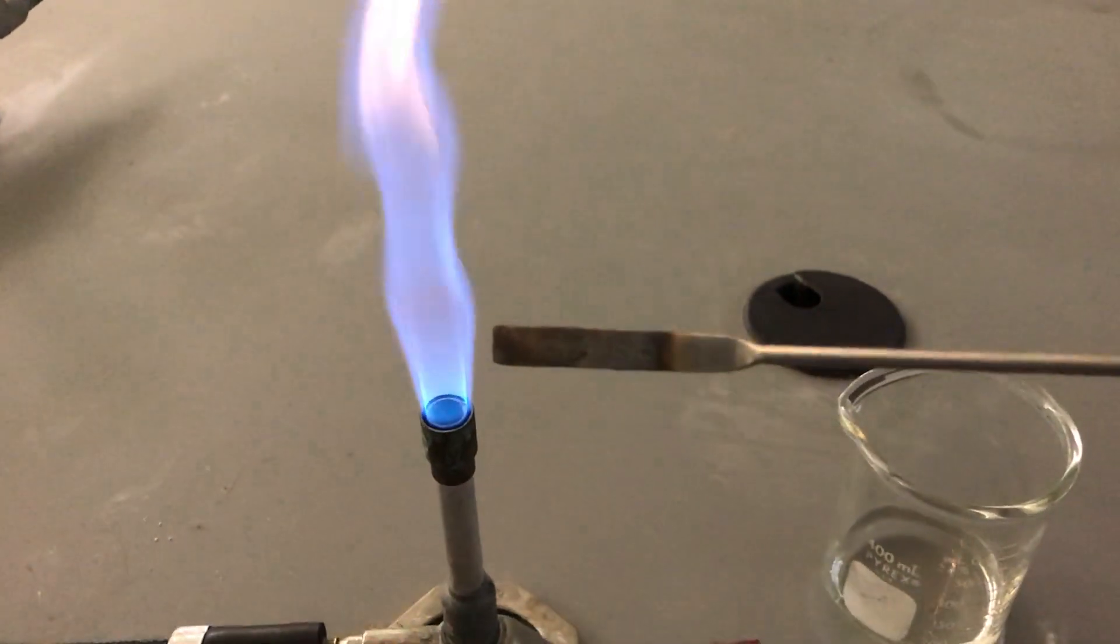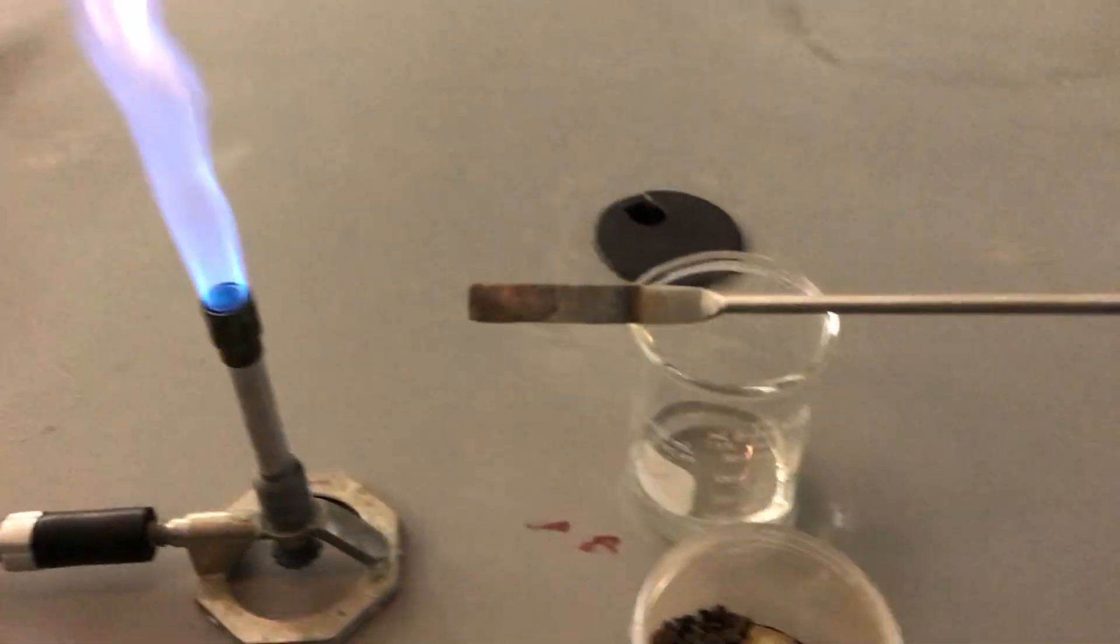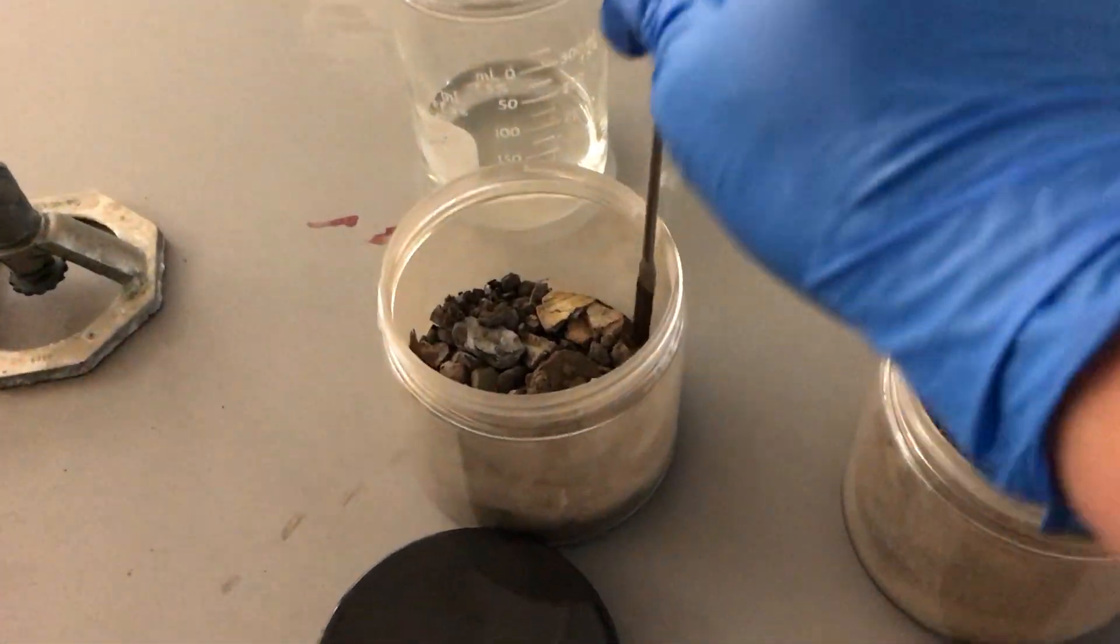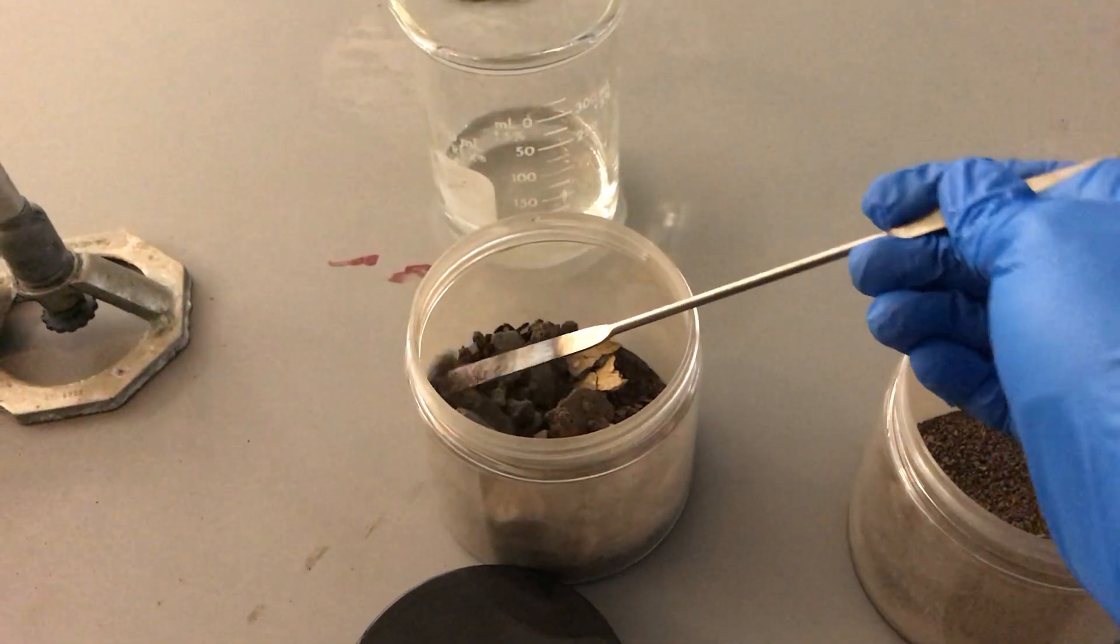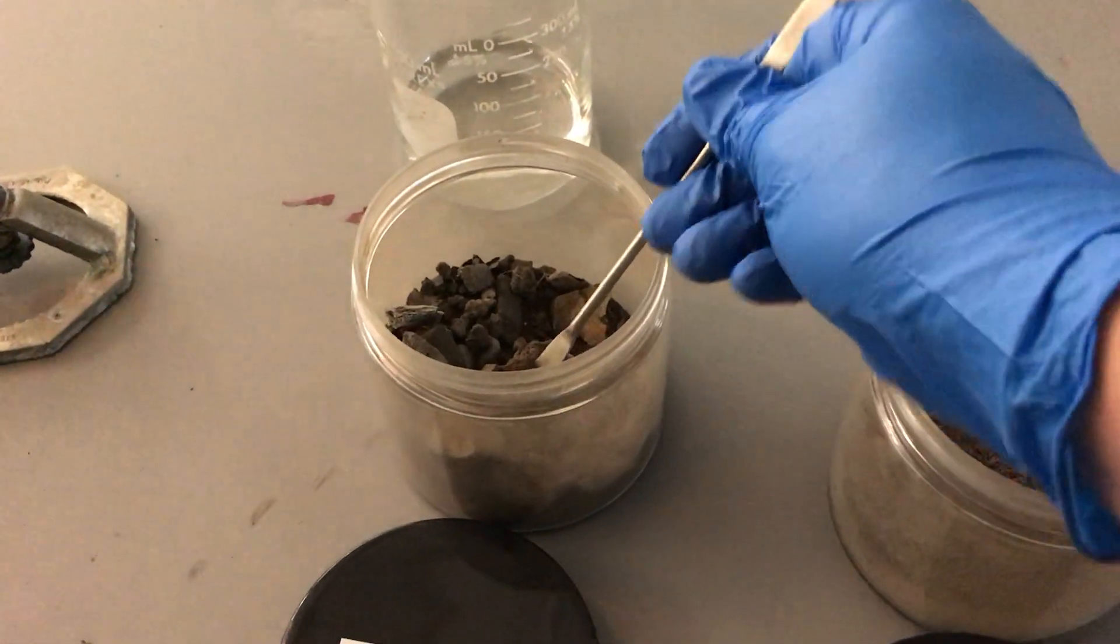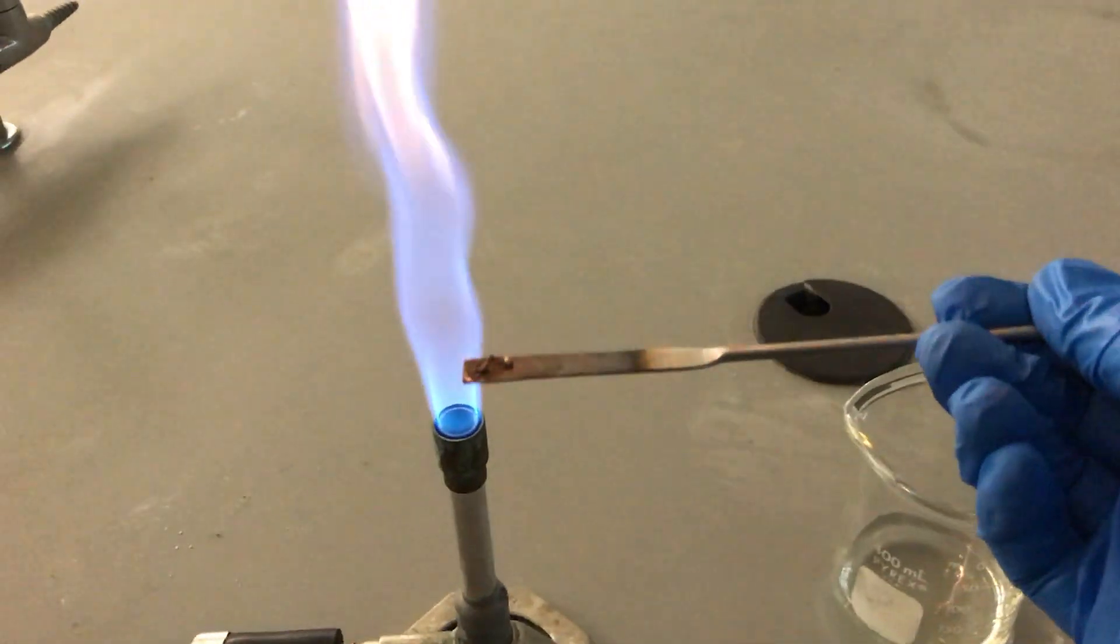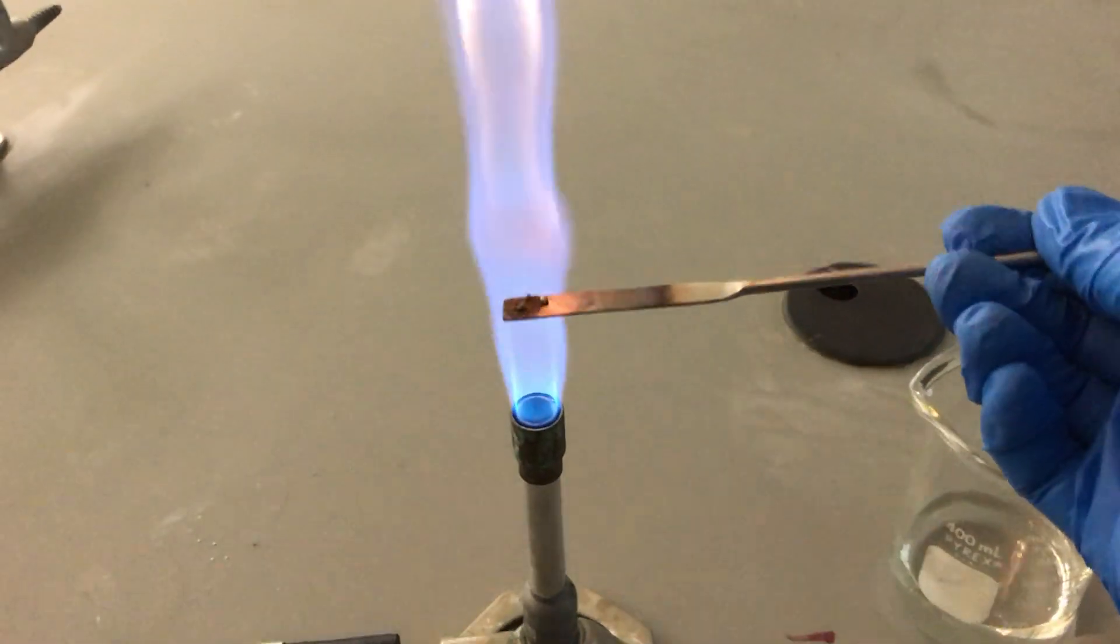Once our spatula is flamed off, we're going to take a spatula full of our first soil sample, which is going to be our crime scene sample. We're just going to introduce it and pick up a few granules of the soil itself, like so.